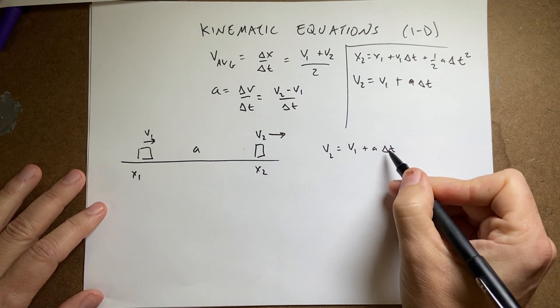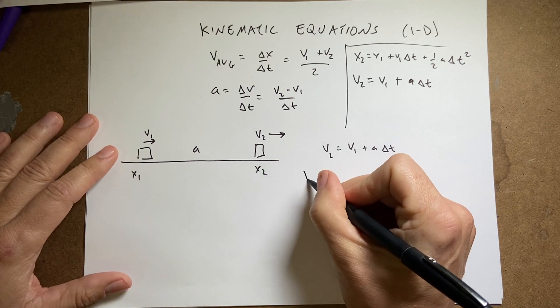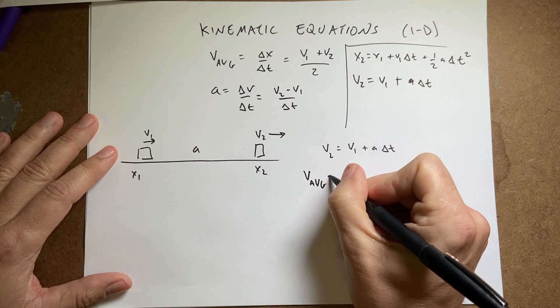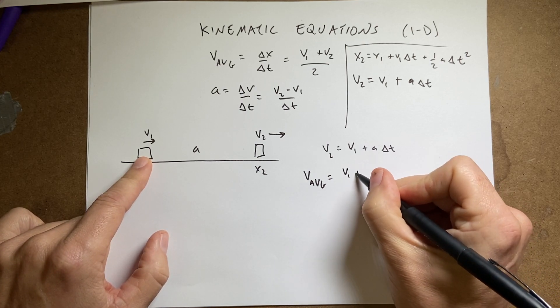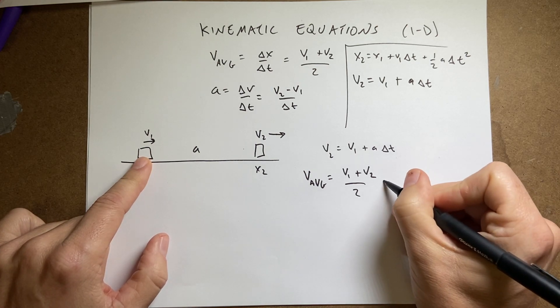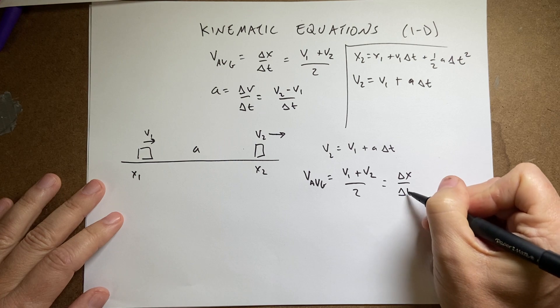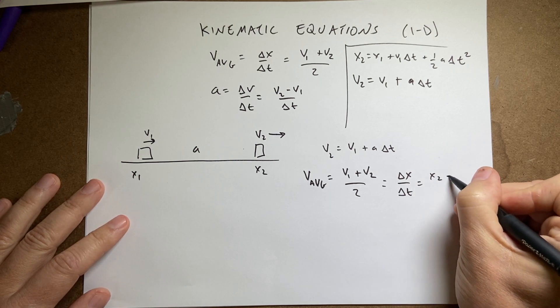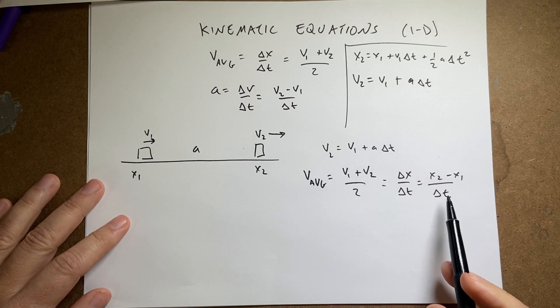Cool. Okay, now what about the time? So the time, I can use the definition of average velocity, v average. It's going to be equal to the initial velocity, v1 plus the final velocity, v2 over 2. That's the definition of average. But it's also equal to the change in x over the change in time. Or x2 minus x1 over delta t. So I want to solve this for delta t.